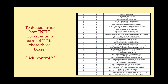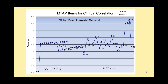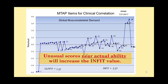To demonstrate how infit works, enter a score of 1 in these three boxes and click Control-B. We'll go from the previous profile to one where outfit has been increased proportionally but modestly, while infit has been almost doubled. Infit increases to the degree in which we have unusual scores near the person's ability level. We've forced Cindy's profile to indicate she's much more capable of doing tasks she shouldn't be capable of doing — items 46, 47, and 48 are very difficult items somewhat above her ability to perform.